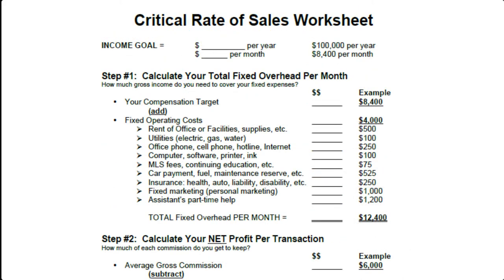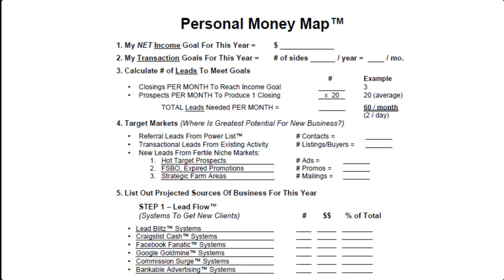Then you'll move on to the last part of the success targeting system, which is identifying which of the categories of systems that you want to use to reach your income goals or targets. On the last page of your success targeting system is what we call the personal money map. This is a way for you to identify based on your income goals and targets, which markets you should select and which system categories you should focus on in the three-step ultimate system.